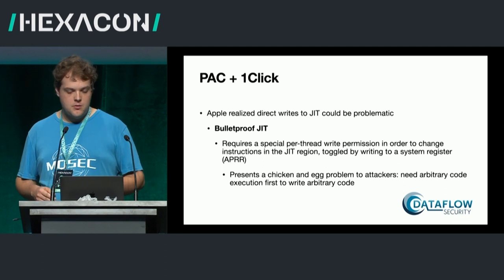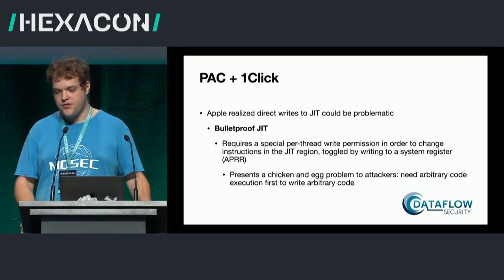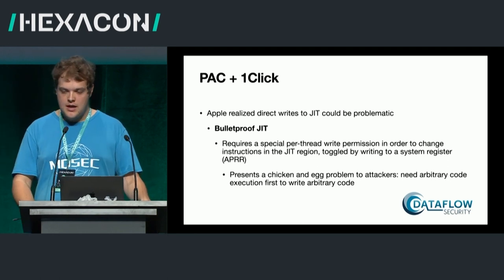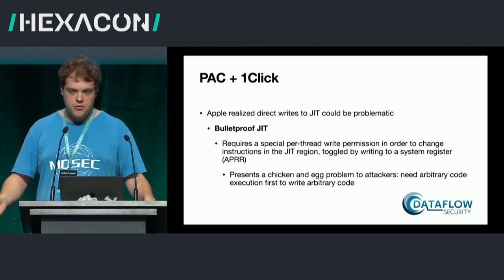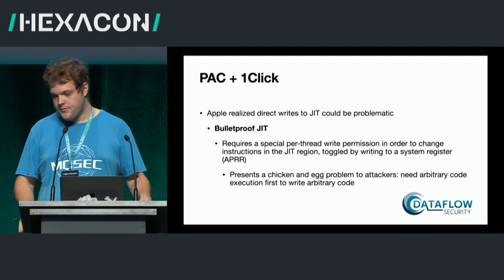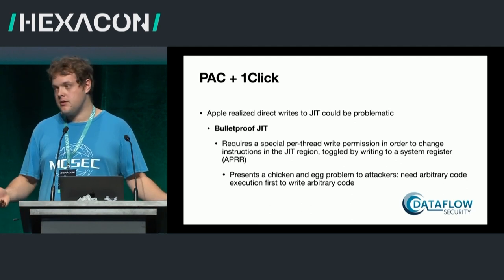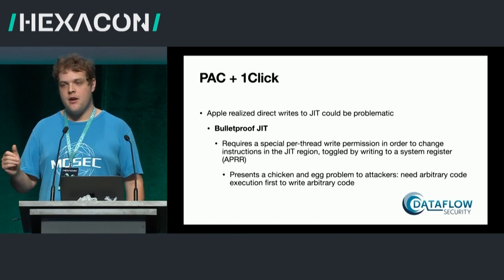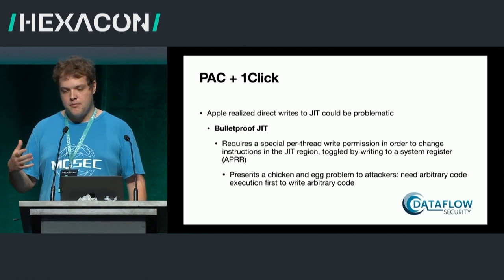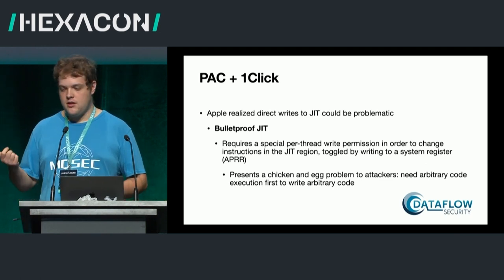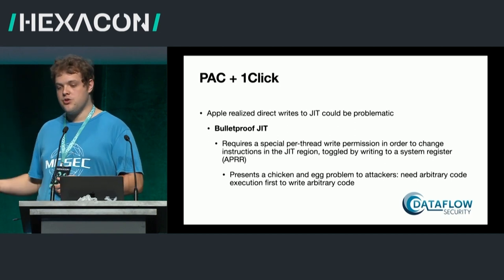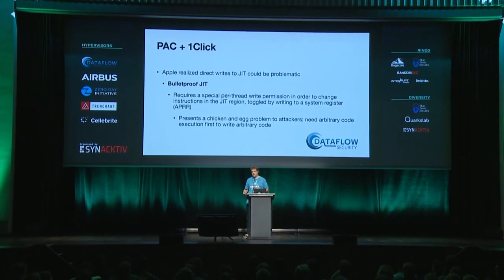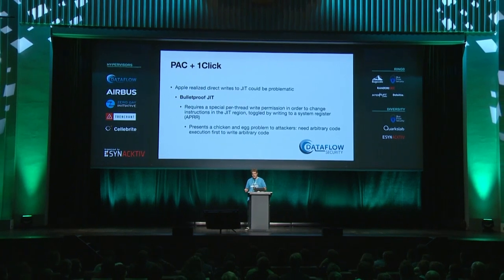PAC significantly influences one-click chain development. One-click chains are browser-based; the browser has JIT, and JIT usually means RWX. Until iOS 8 or 9, the go-to strategy was to write instructions directly into the JIT region, bypassing PAC entirely because you're writing instructions on top of a function you're already allowed by CFI to call — you could put any branch in there and forge PACs fairly easily. Apple realized this was very problematic and introduced Bulletproof JIT, now featuring a special per-thread write permission that toggles the JIT region between writable and executable. This is a significant problem for attackers: at the point where you use a write-anywhere primitive, the JIT region won't be writable; and if you make it writable, you're likely running JIT from JavaScriptCore and it won't be executable. This ties JIT to CFI in a relatively safe manner.